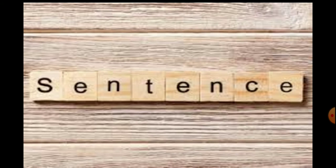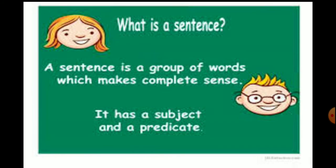Today children we are first of all going to learn about sentence. So all of you have got knowledge about what is a sentence. A sentence is a group of words which makes complete sense and it should always have a verb. There is a subject and a predicate. In a sentence you always have a verb and you have a subject and a predicate. So the group of words that makes sense is called a sentence.